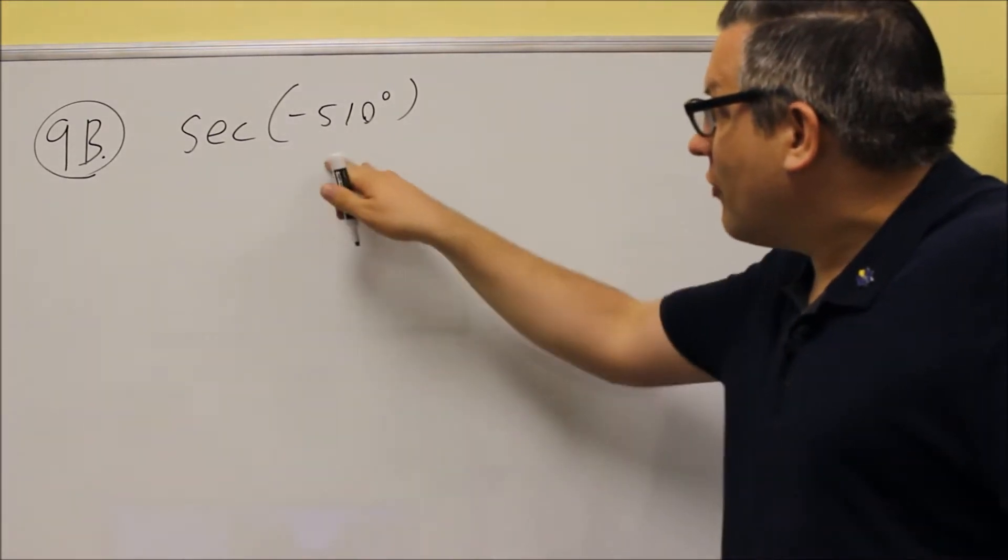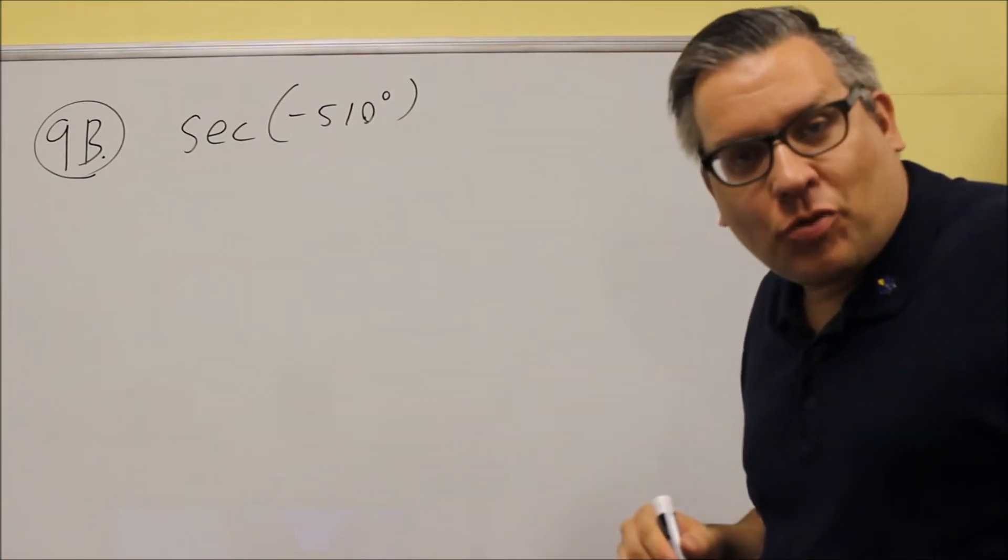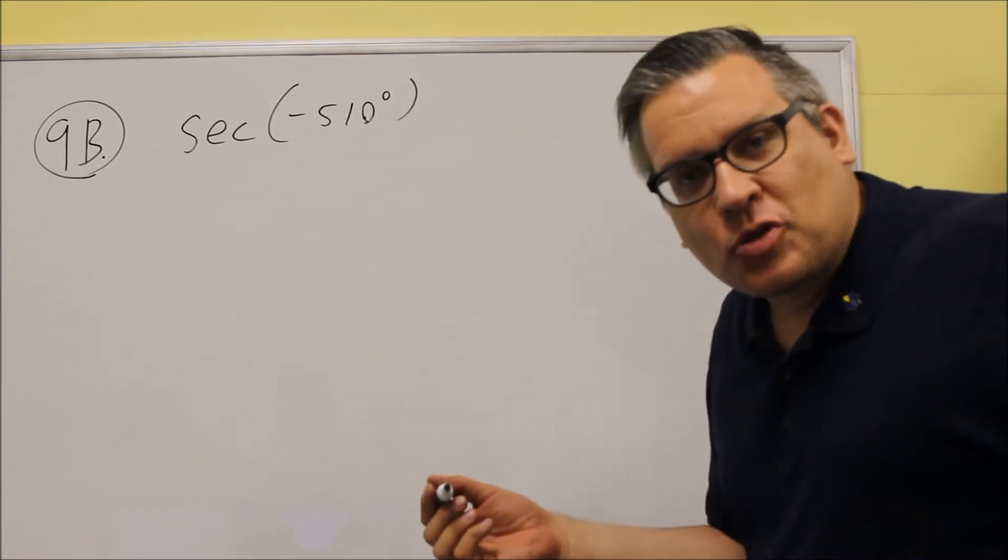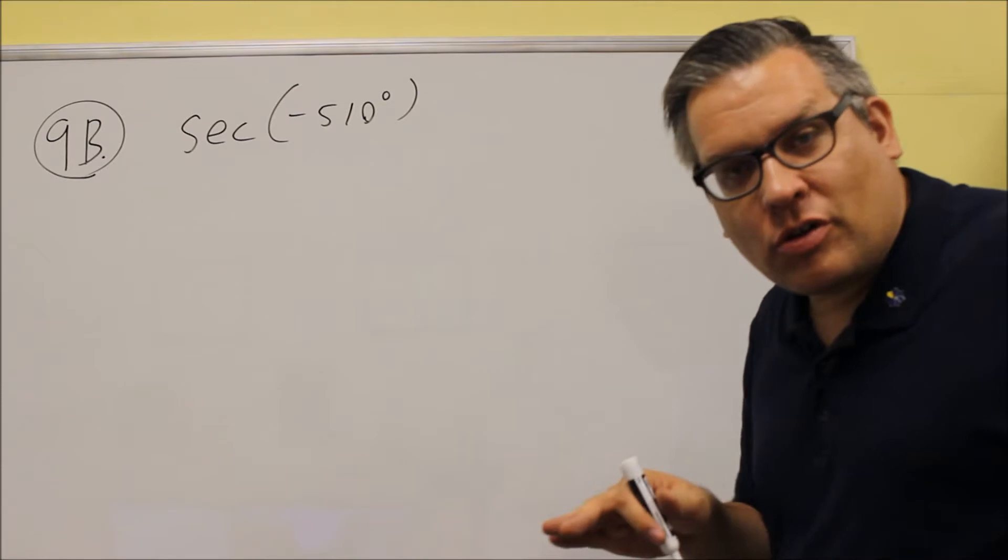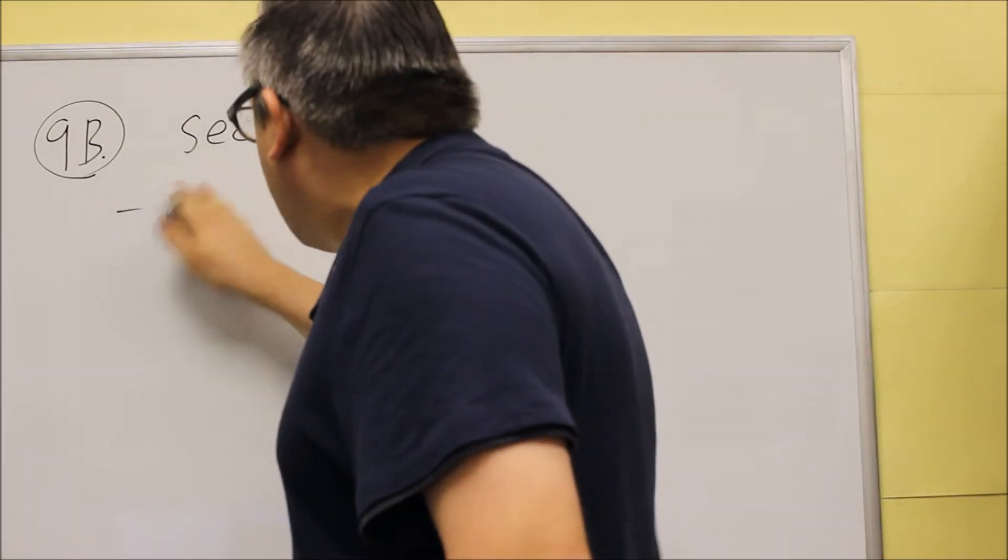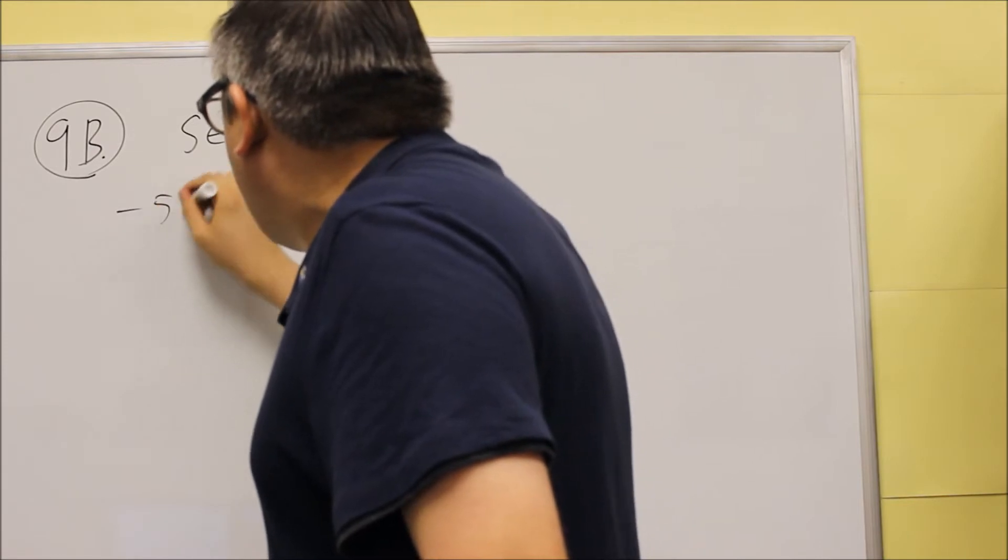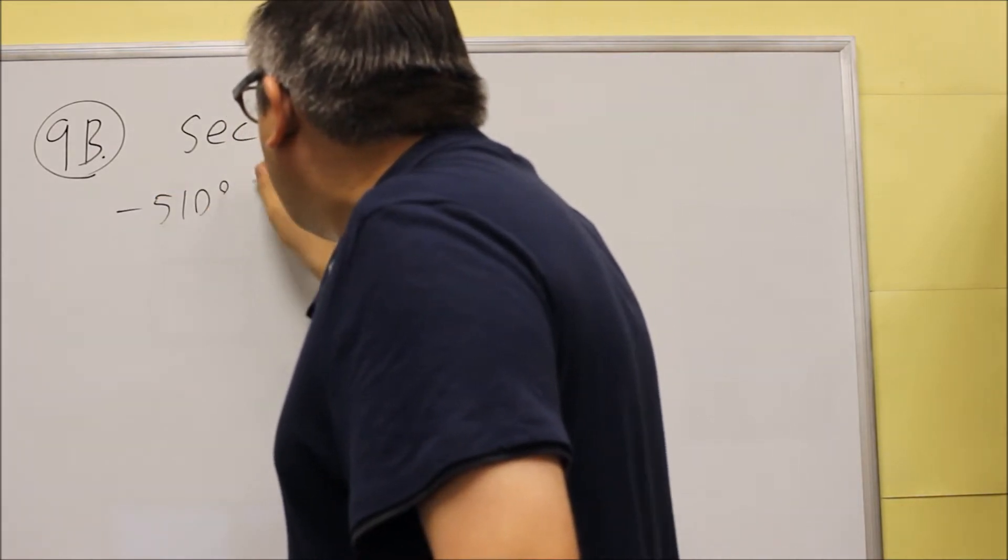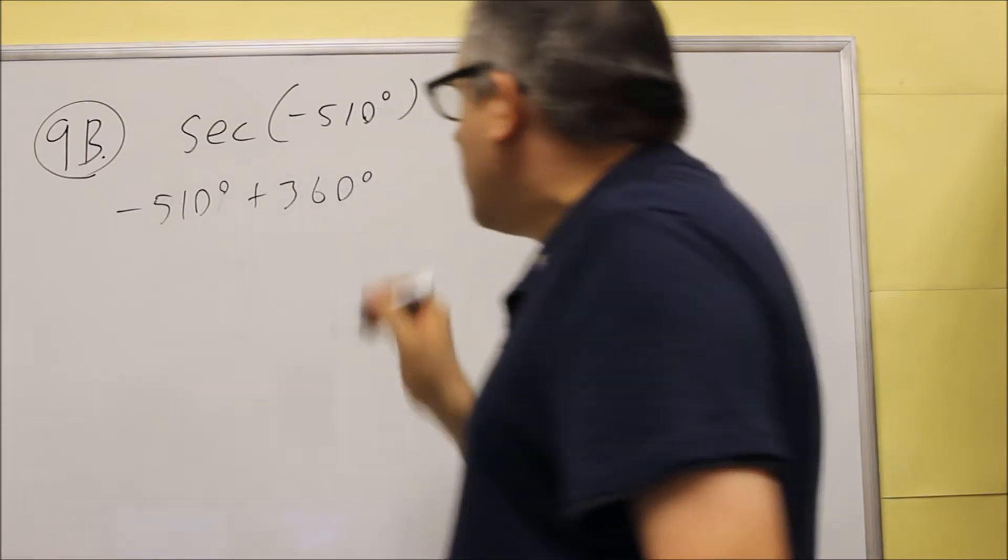So again, if you have a negative angle, you want to keep adding 360 until it becomes positive. And once it's a positive angle, then you can stop adding the 360. So first, we're going to take negative 510 and we're going to add to it 360.